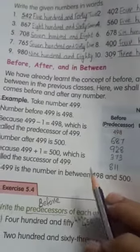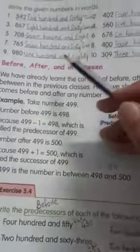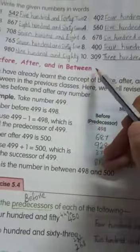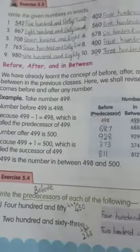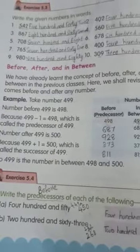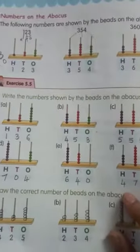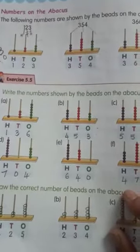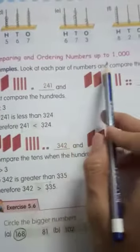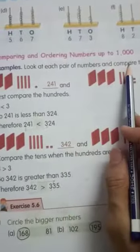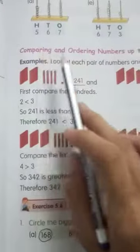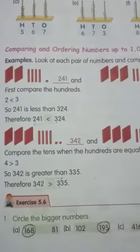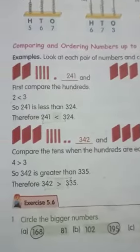In your zoom class, we have completed before, after and in between — that is predecessor and successor. We have also completed numbers on the abacus. So in today's video, we are going to learn comparing and ordering numbers up to 1000.